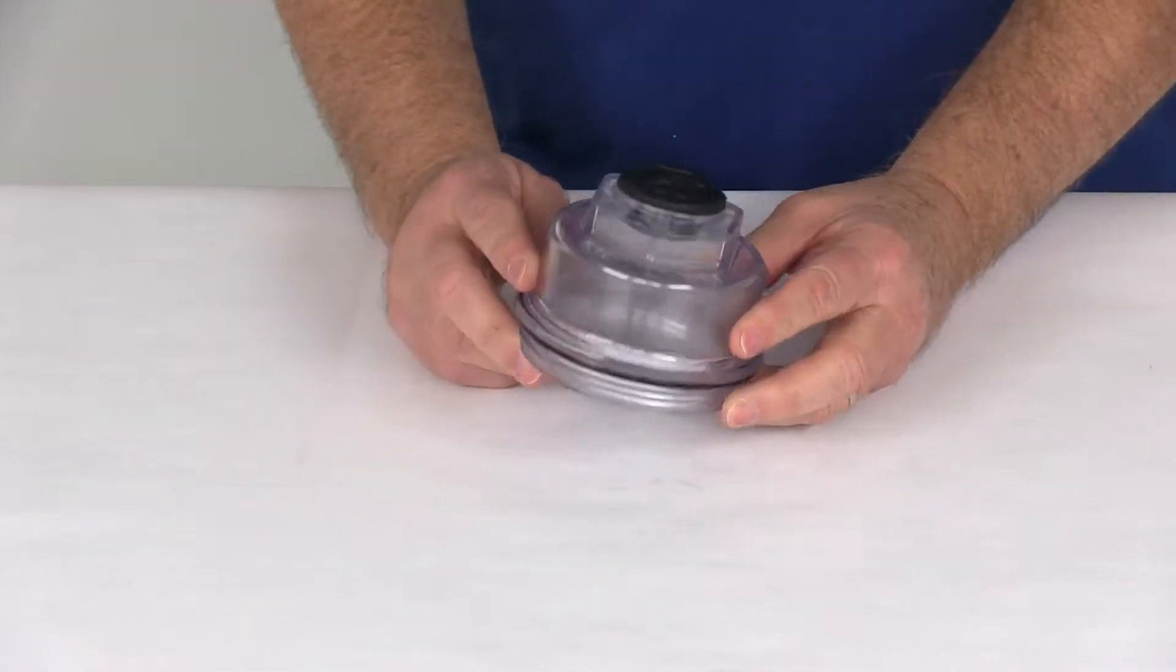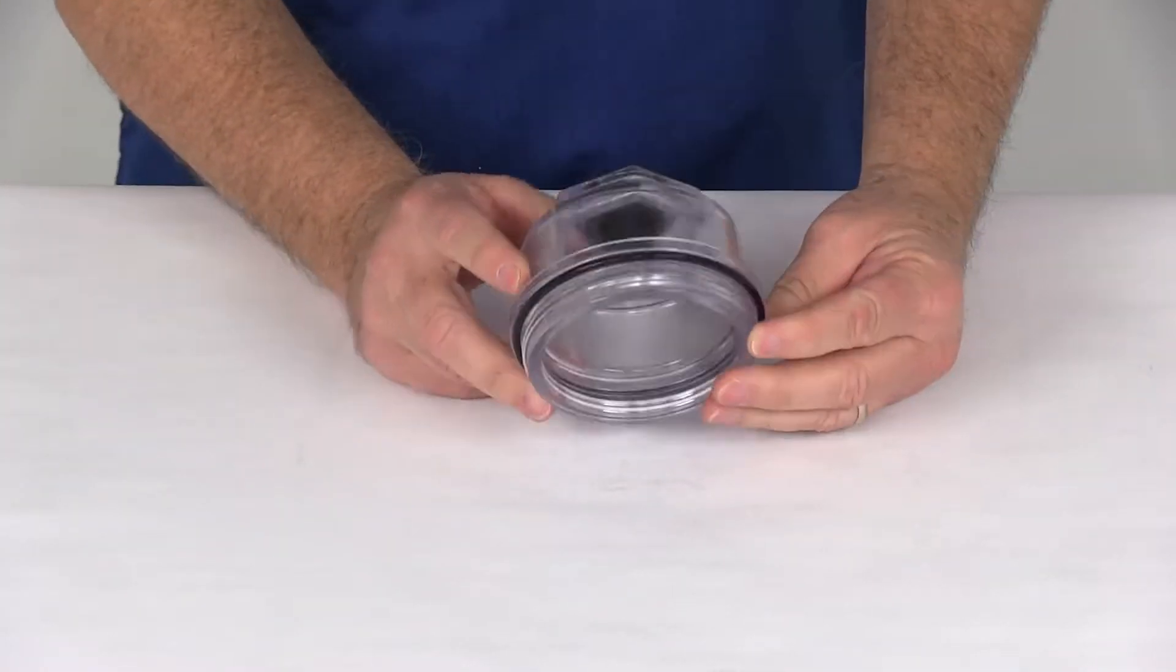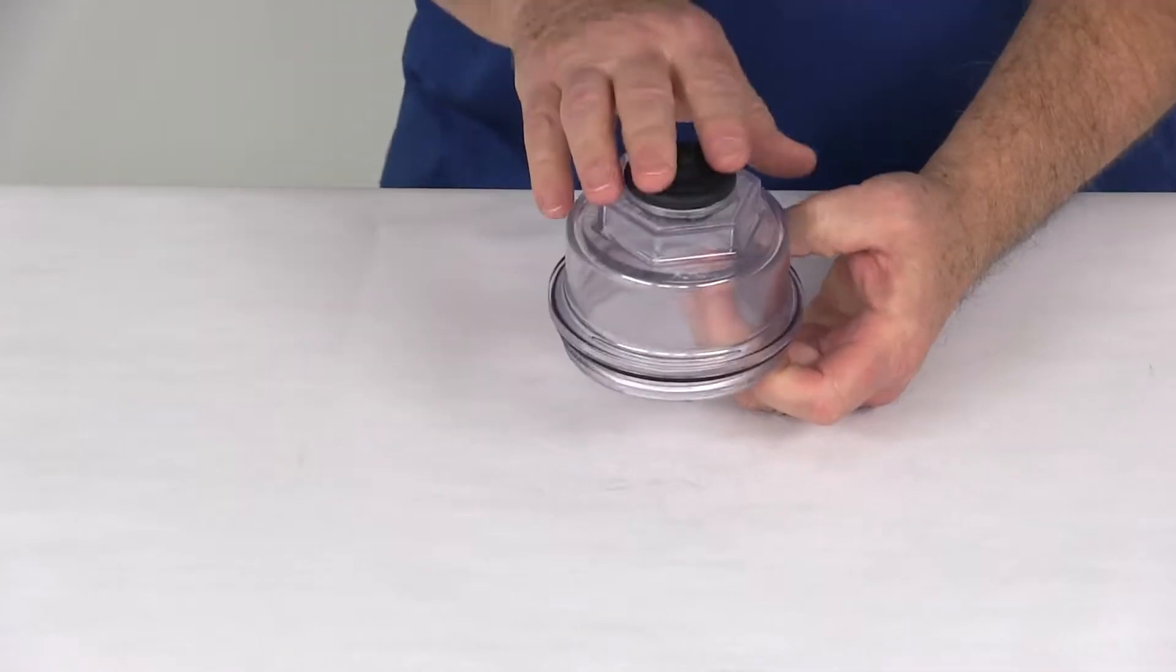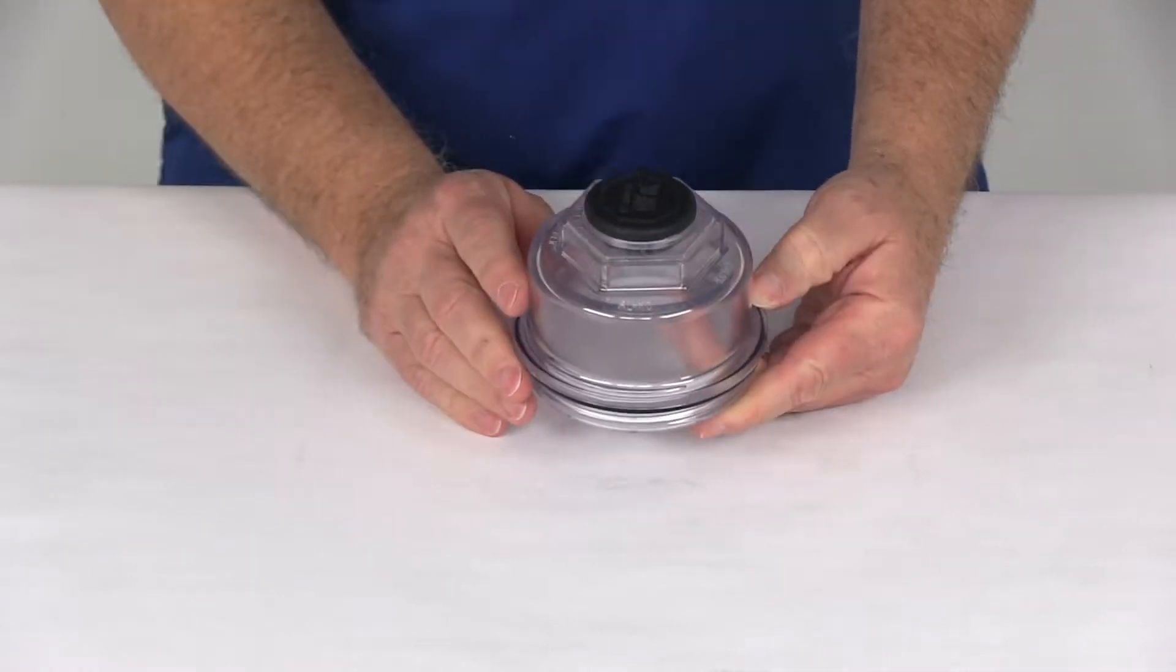Today we're going to take a look at the oil cap kit for the 10,000 and 12,000 pound axles. This is designed to fit 10,000, 12,000 pound Hayes and Alco axles.